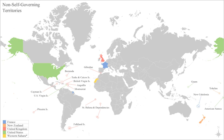Alaska was a colony of Russia from the middle 18th century until sold to the United States in 1867, becoming the 49th American state in 1959. Angola was a colony of Portugal since the 16th century, independent since 1975. Argentina gained its independence from Spain in 1810. Australia was formed as an independent country in 1901 from a federation of six distinct British colonies, which were founded between 1788 and 1829.